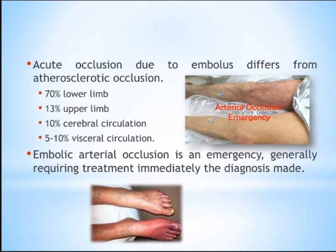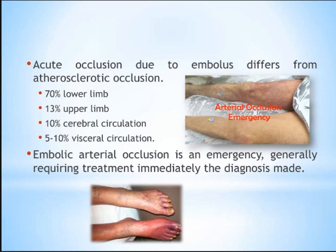Acute occlusion due to embolus is different from atherosclerotic occlusion. Atherosclerotic occlusion is gradual, while embolus is acute. The embolus affects approximately 70% of cases in the lower limb, 13% in the upper limb, 10% go to the cerebral circulation causing TIA or stroke, and 5-10% go to the mesenteric or renal artery. Arterial occlusion is an emergency — upper limb has six hours and lower limb not more than four hours to survive.